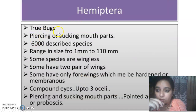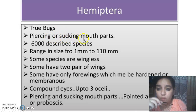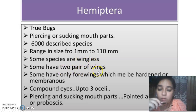Hemiptera actually contains the true bugs. They have piercing or sucking mouthparts because they are major agricultural pests of crops and trees. Around 6,000 species have been described, ranging from 1 mm to 110 mm. Some species are wingless forms, but mostly they have two pairs of wings, with the forewing modified into a particular structure.